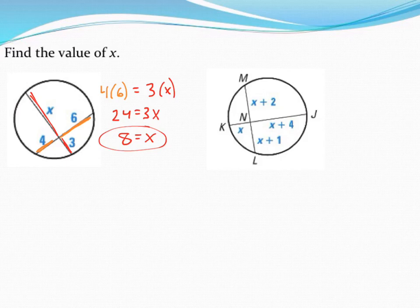We can try a little more complicated example over here to the right. However, the same idea still holds. The product of these two pieces, the two pieces of the same chord, is going to be equal to the product of the other two pieces.